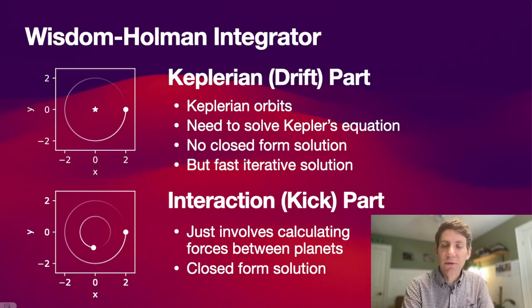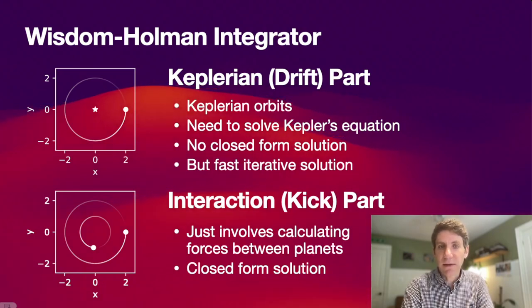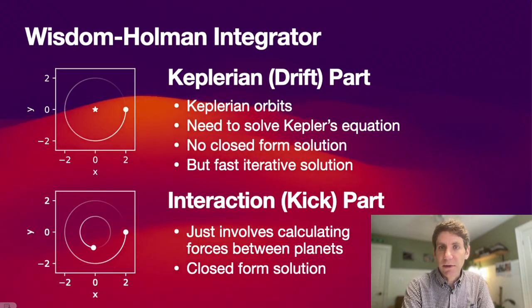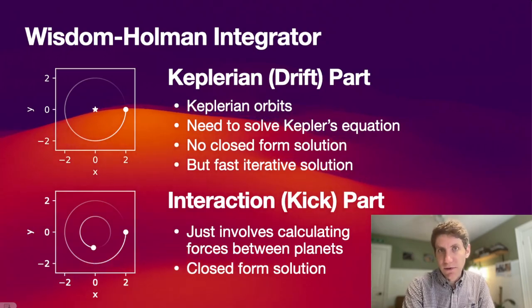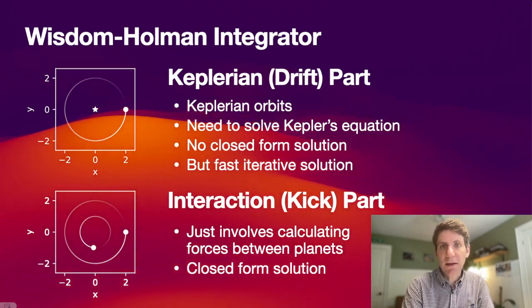In the interaction step, we calculate the remainder of the planet's trajectory, namely the interactions between other planets that we have left out before. These are just force calculations between planets, and we can solve this part of the Wisdom-Holman integrator explicitly in a closed-form solution.